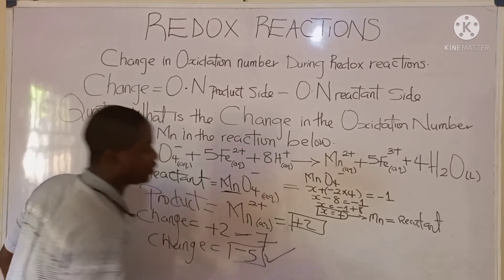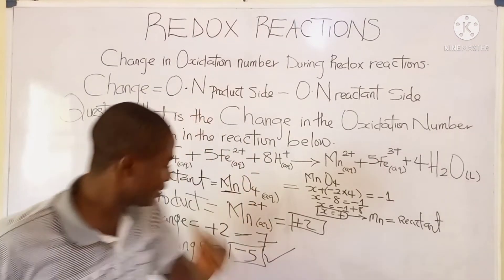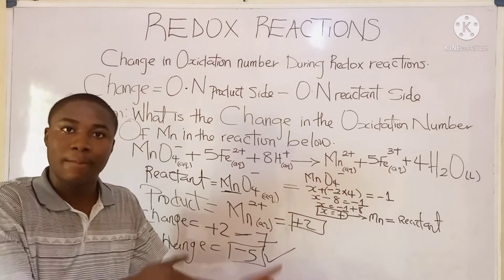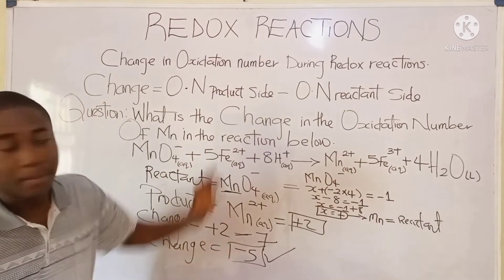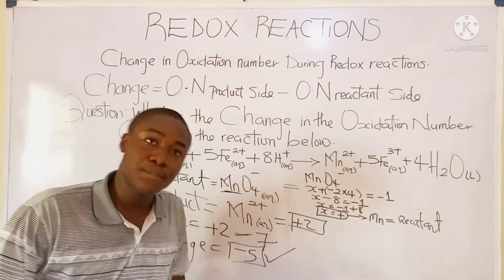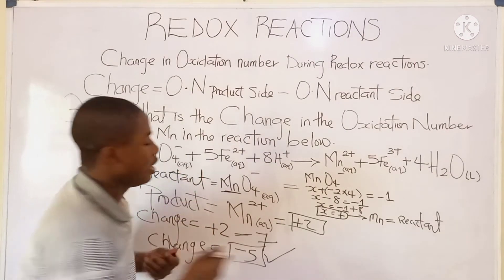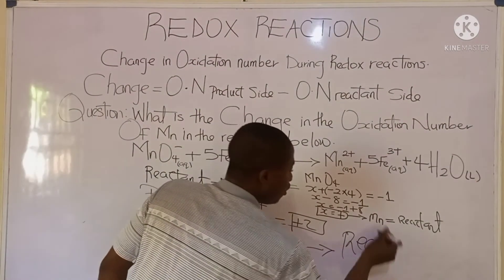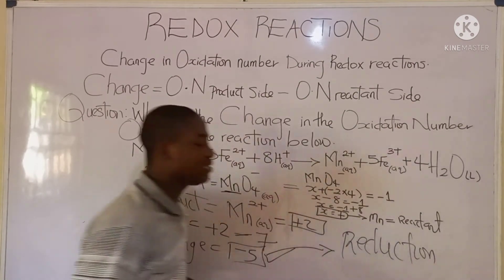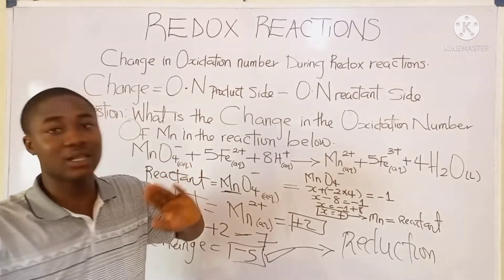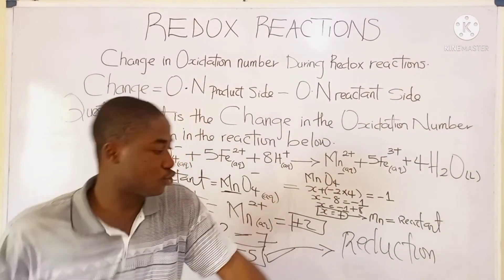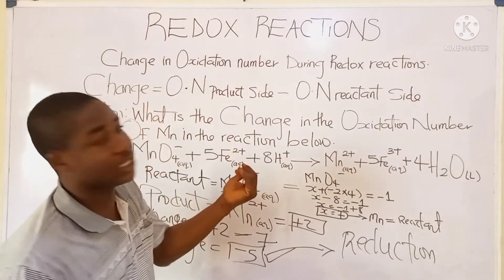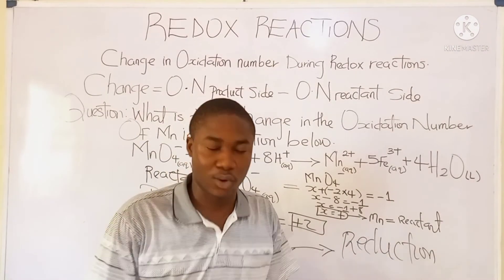This is the answer — the change is minus 5. It must be noted that a negative answer indicates a gain of electrons per atom of manganese, meaning the process occurring is called reduction. If the answer had been positive, the process would have been oxidation. Reduction is the decrease in oxidation number, while oxidation is the increase in oxidation number.